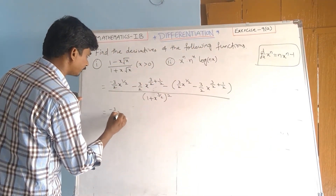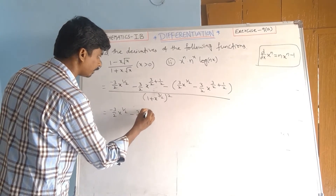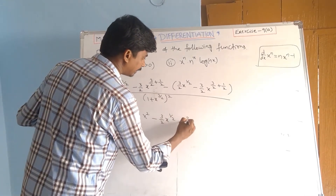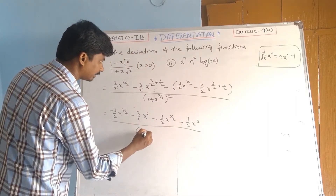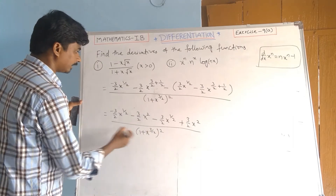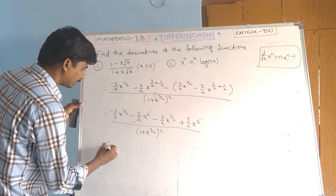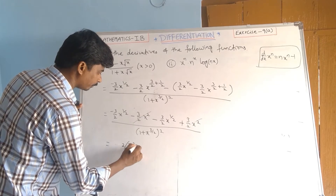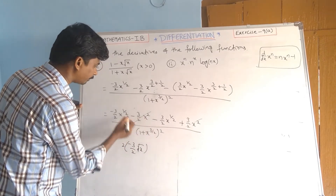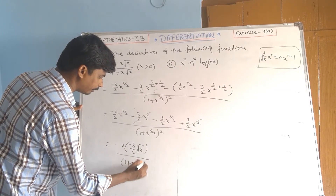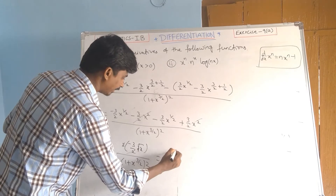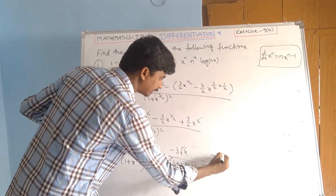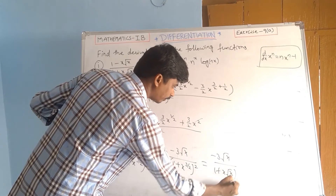That equals: minus 3/2 x to the power of 1/2 minus 3/2 x squared, minus 3/2 x to the power of 1/2 plus 3/2 x squared, over (1 plus x to the power of 3/2) whole squared. The 3/2 x squared terms cancel. That equals 2 times minus 3/2 root x, and the 2 cancels, giving minus 3 root x over (1 plus x to the power of 3/2) whole squared — which equals minus 3 root x over (1 plus x times root x) whole squared.